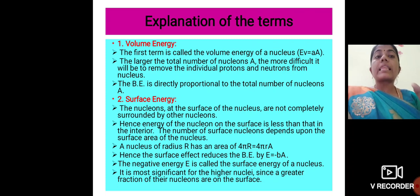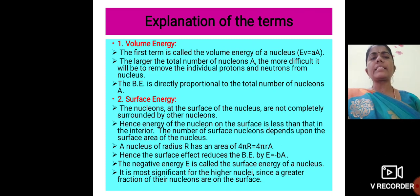The second term is the surface energy. The nucleons at the surface of the nucleus are not completely surrounded by other nucleons. So the energy of the nucleon on the surface is less than that in its interior. The number of surface nucleons depends upon the surface area of the nucleus. Hence the surface effect reduces the binding energy by E, that is minus BA. The negative energy E is called the surface energy of the nucleus. It is most significant for the higher nuclei, since a greater fraction of their nucleons are on the surface.